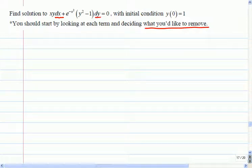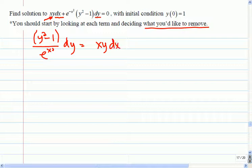So this time, I see the y that's stuck in here. And that makes me think I'd like to remove that. So I'm going to pull this piece over. This will be the start of my x's. I'll have y squared minus 1 over e to the x squared. And I have a dy there. And on this side, I have xy dx. And since I have subtracted it, there'll be a negative there.